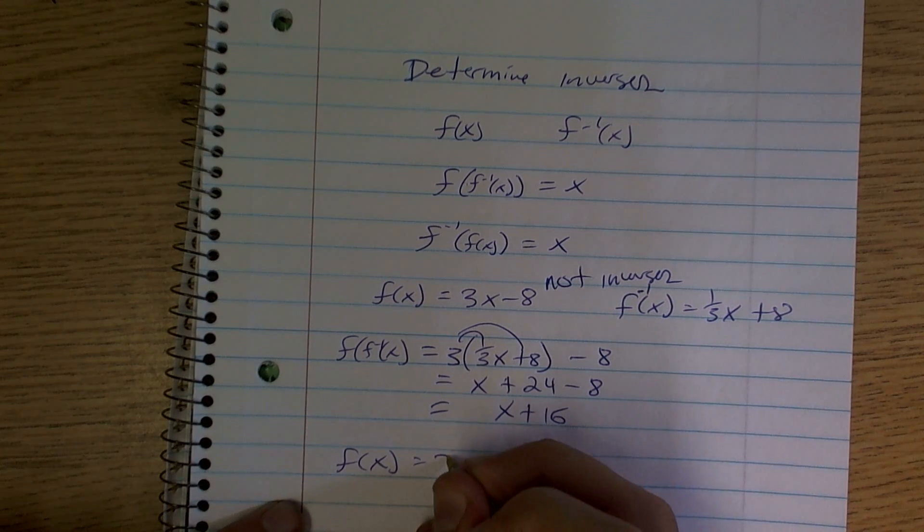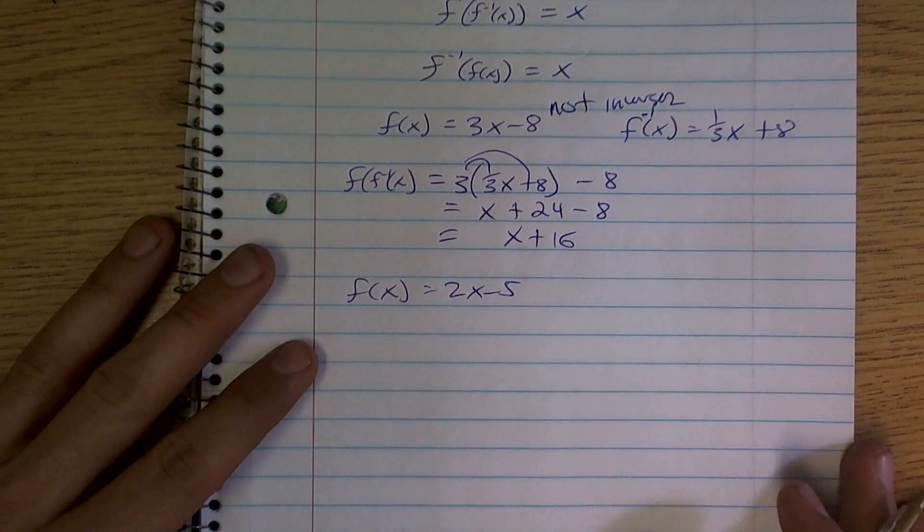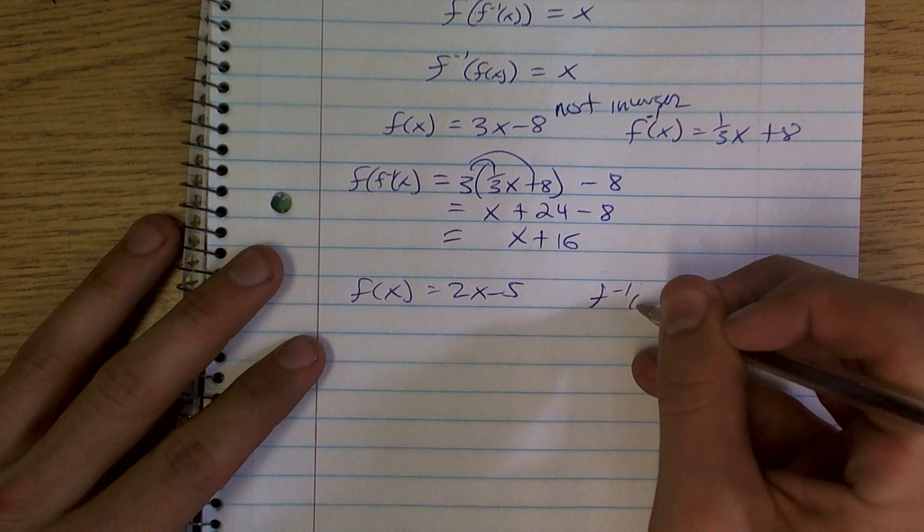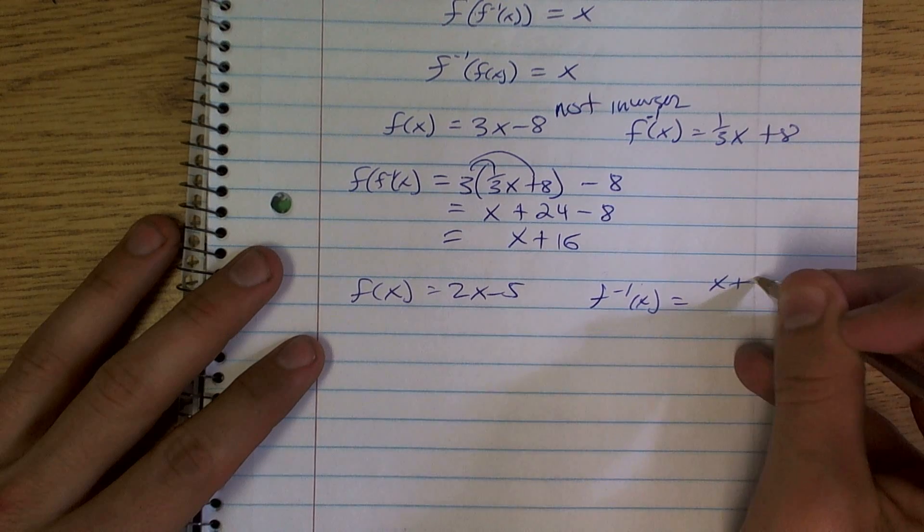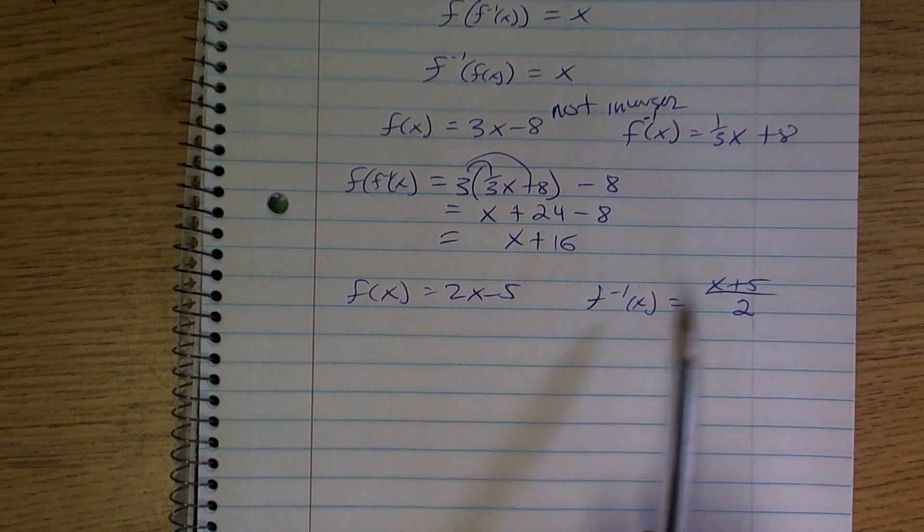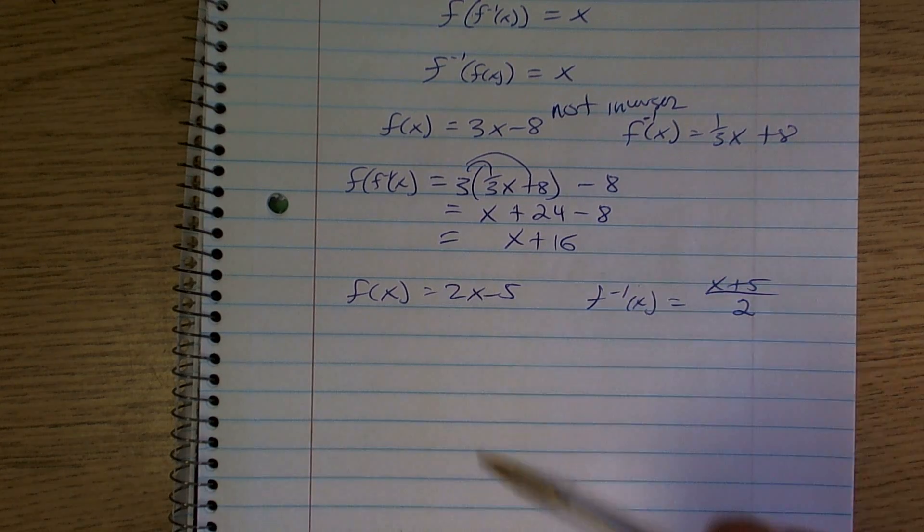Let's just say f of x equals 2x minus 5, and f inverse of x equals x plus five over two. So now let's just do the exact same thing. Let's take our inverse function and let's plug it in.